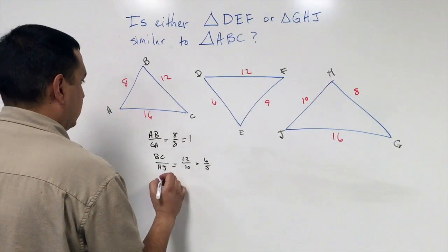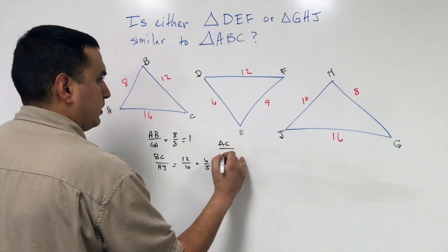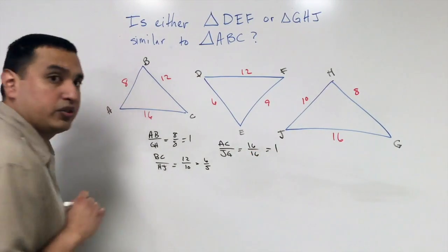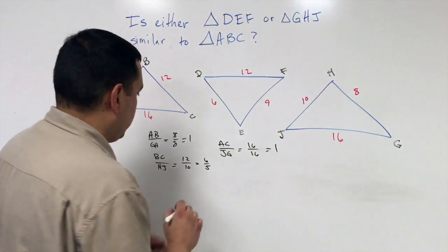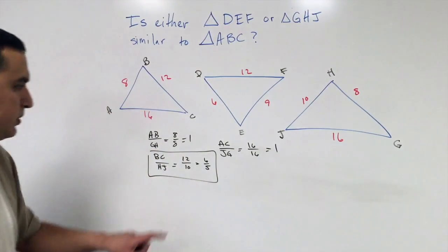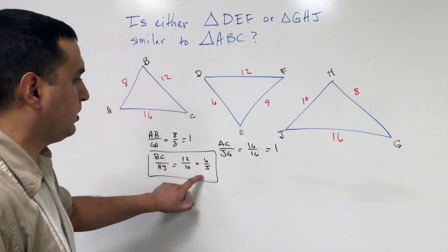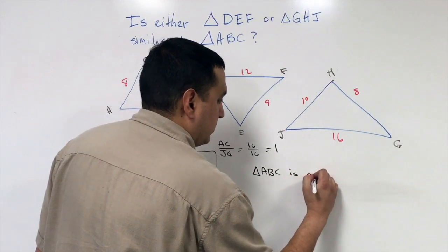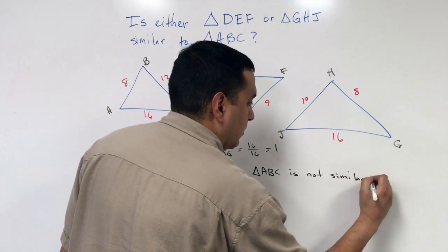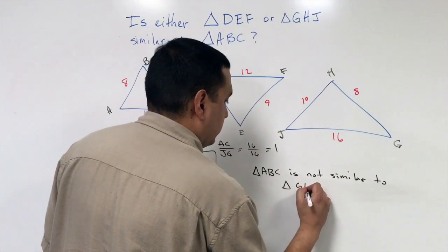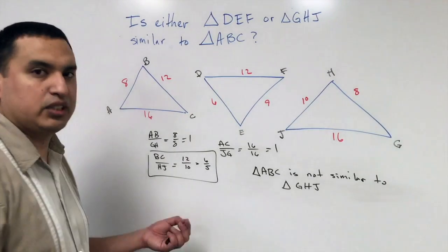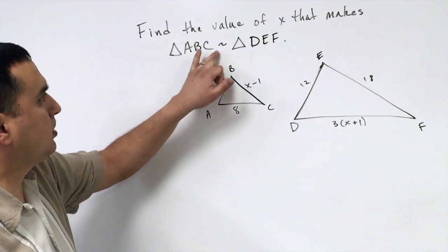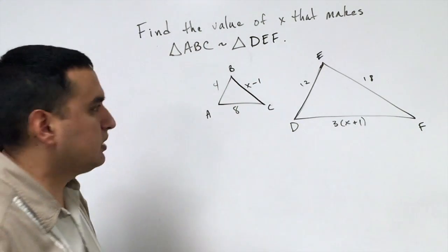If I do the long side, that's going to be AC over JG, which is 16 over 16, that reduces to 1. However, this middle side gave me a different ratio of 6 over 5. So then I would say triangle ABC is not similar to triangle GHJ.